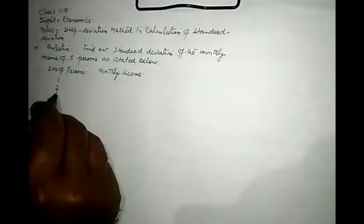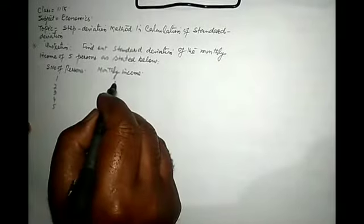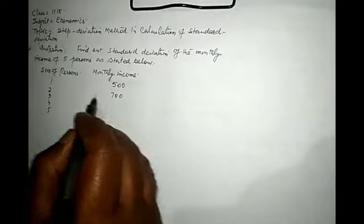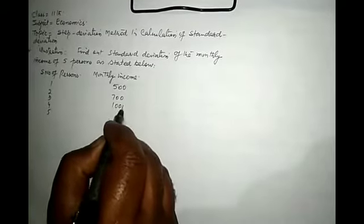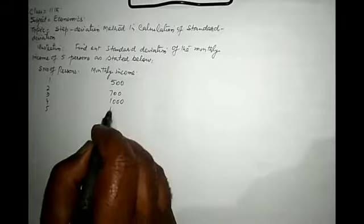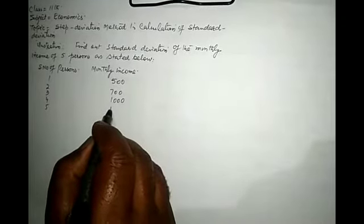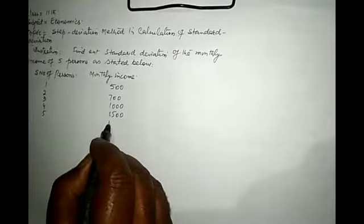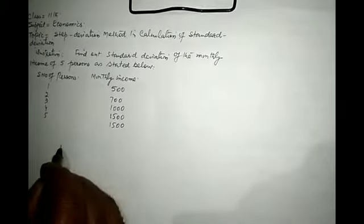1, 2, 3, 4, 5. The monthly income of the first person is 500, second is 700, third is 1000, fourth monthly income is 1500 and fifth monthly income is 1500. Now we will go to the solution part.